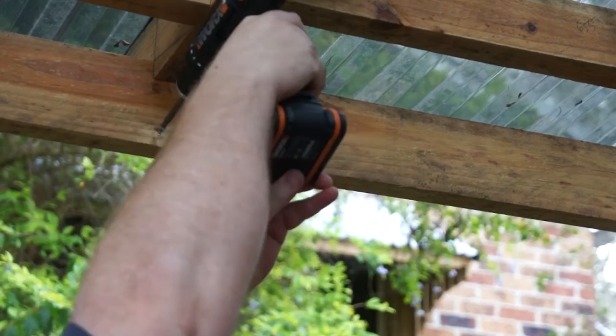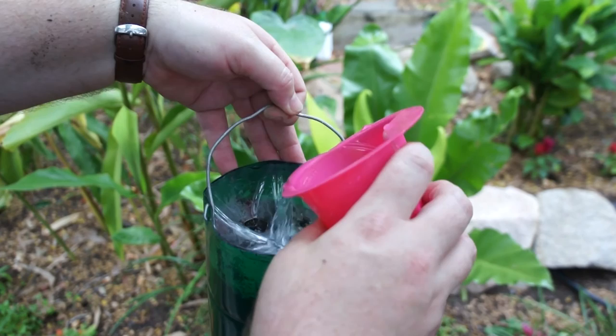And here's how the funnel works. Just simply pour in the top, the water flows through those holes and into the soil.